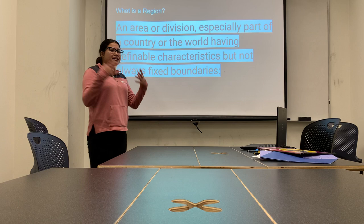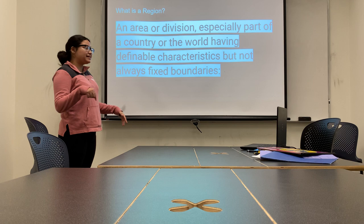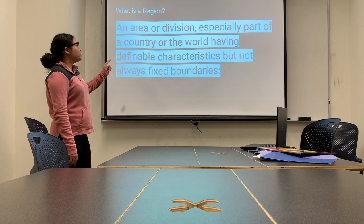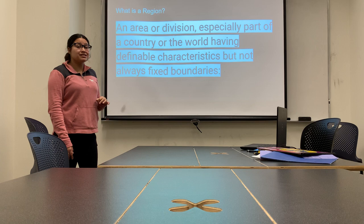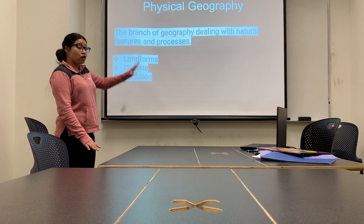But what even is a region? Well, a region is an area or division, especially part of a country — in this case the United States — where the world has indefinable characteristics but not always fixed boundaries. A summarized version: a region is an area, part of a country, that has identifiable characteristics, and those characteristics are going to be the physical ones we see: landforms, climate, and vegetation.